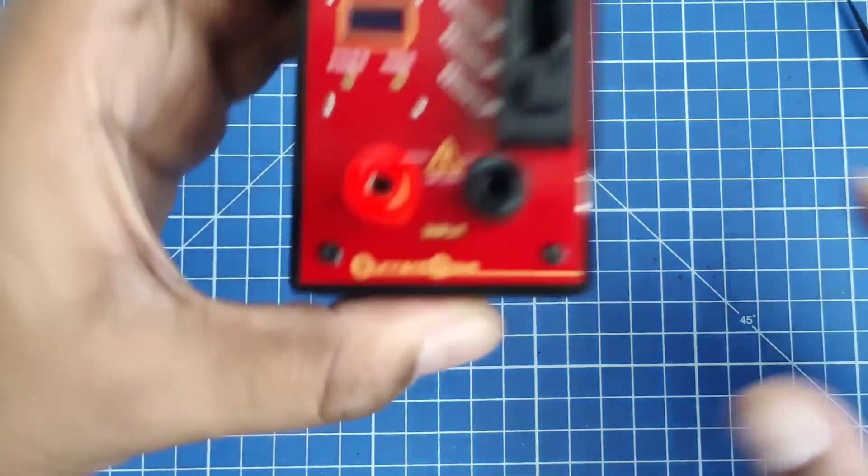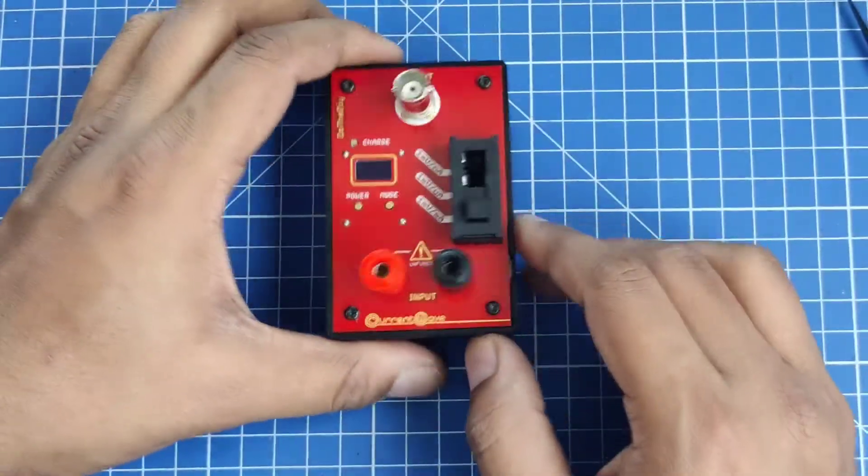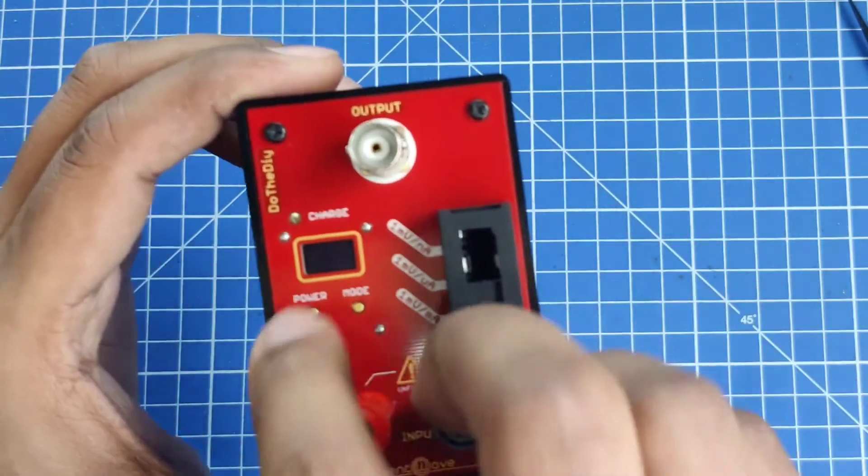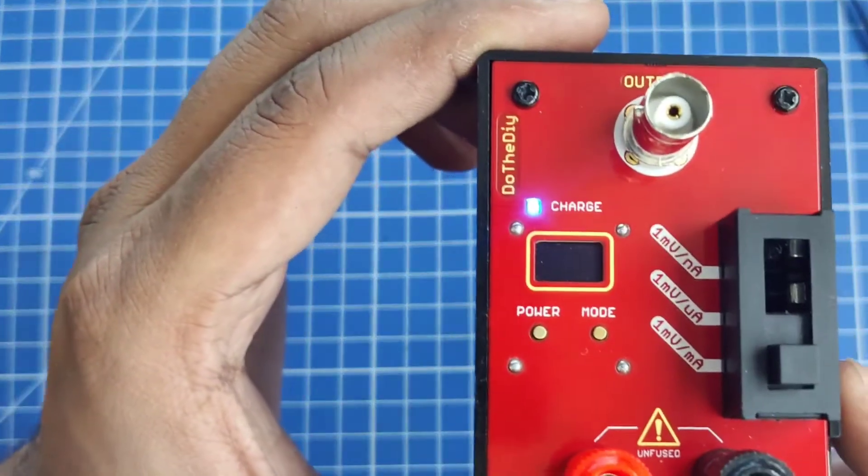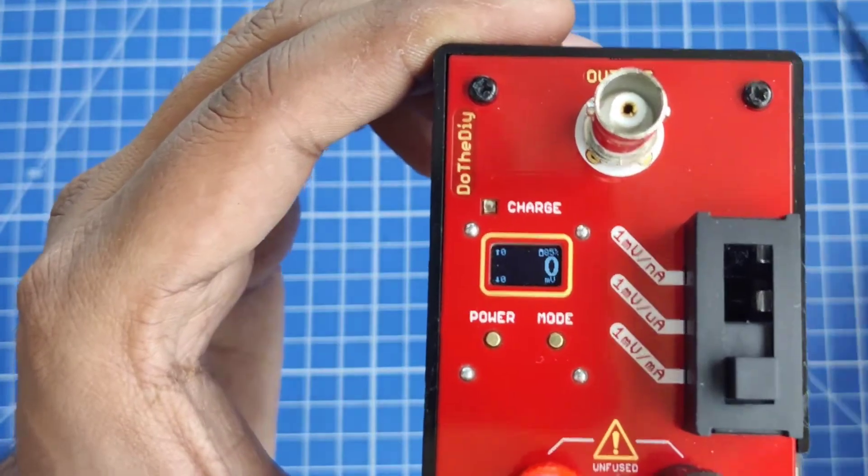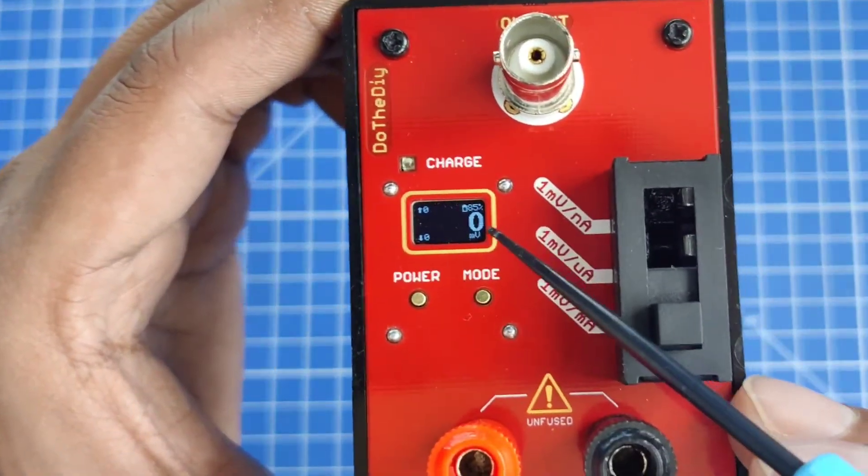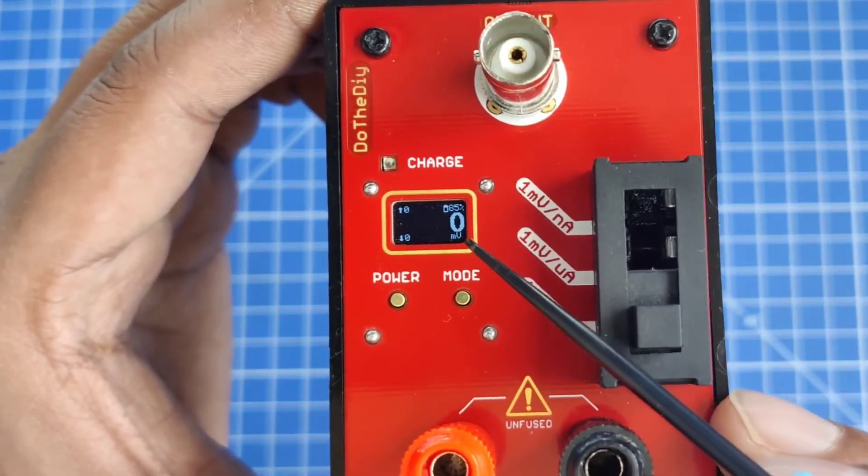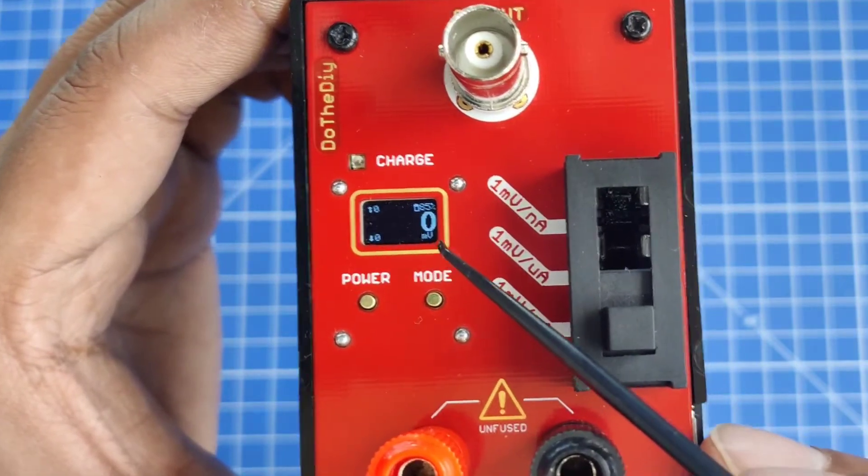I will just power on and show you the device now. On the screen you can see this big digit corresponds to what the device is measuring and directly corresponds to whatever range is selected on this switch.